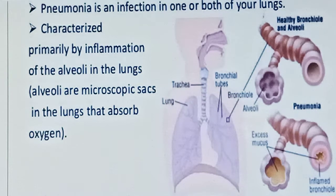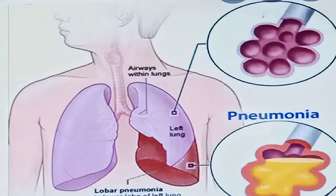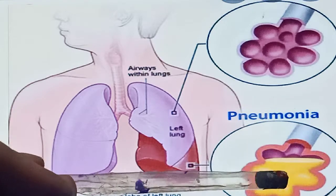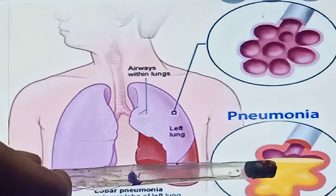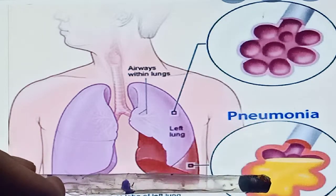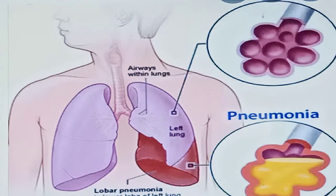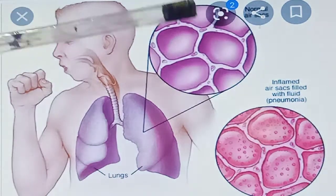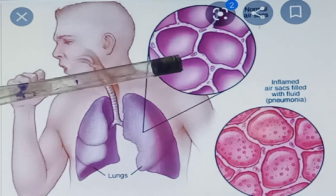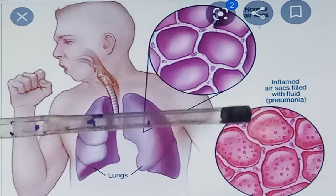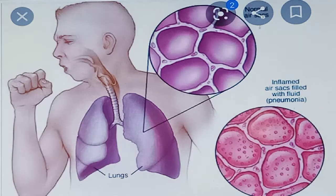Alveoli are microscopic sac-like structures present in the lung, mainly involved in gaseous exchange — they absorb oxygen. This is the structure of alveoli. In the pneumonia case, these alveoli are filled with pus. Mostly bacteria, viruses, and some WBCs taking part in the inflammatory condition — these dead cells are present, and due to this, pus accumulates in the alveoli. This shows the normal structure of air sacs versus the inflamed air sacs filled with fluid, which is due to the pneumonia condition.